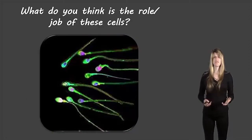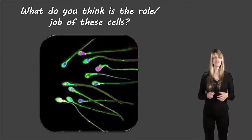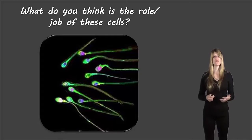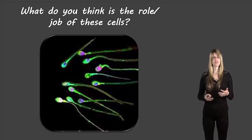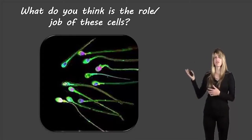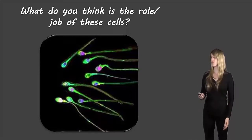Then we have some sperm cells. Each sperm cell has a flagellum, which is what looks like a tail in that picture. The flagellum allows the sperm cell to move, which is obviously an important role for that type of cell. So each of the different types of cells look different, or they have different types of organelles that allow them to perform their roles.